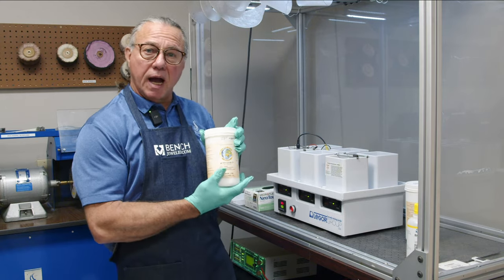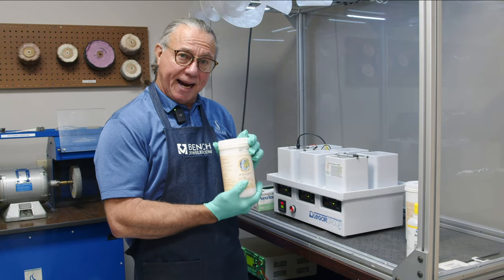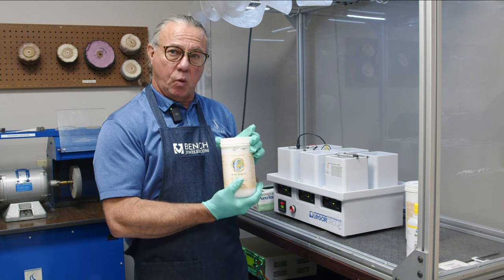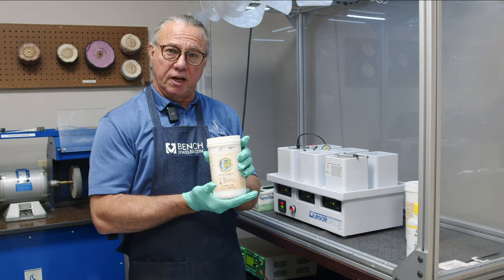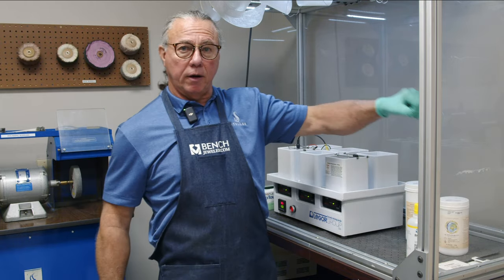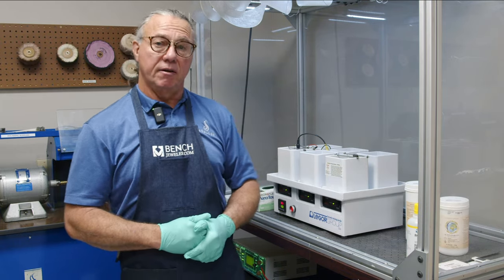We also use a Clean Earth Acid Activator. It also is mixed a quarter cup to one gallon, and this is used at room temperature where the ElectroClean is heated from 140 to 160 degrees Fahrenheit.